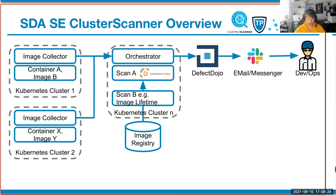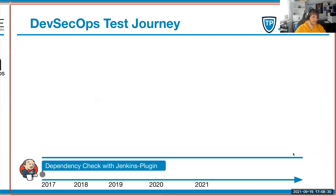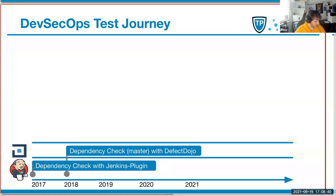You're always free to ask - you can always stop me and say you have a question and we can discuss it directly. So this is the journey we went through. We started with a Jenkins plugin for the dependency checks, but that was not so good because the vulnerabilities just had a threshold. It's a very bad approach to set a threshold when you don't pin on the vulnerability that you've actually handled it. That's why we then used DefectDojo.